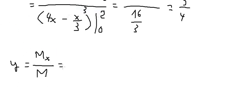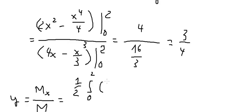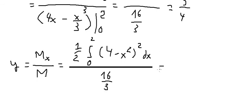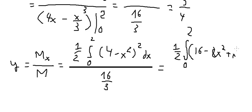For y-bar, the numerator is one-half times the integral from 0 to 2 of (4 minus x squared) squared dx. The denominator is 16 over 3. We need to expand (4 minus x squared) squared, which gives 16 minus 8x squared plus x to the power of 4.